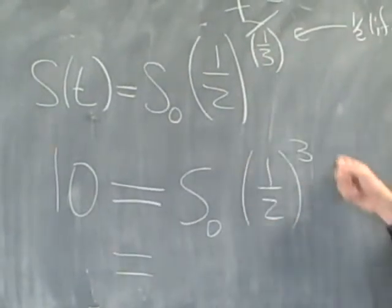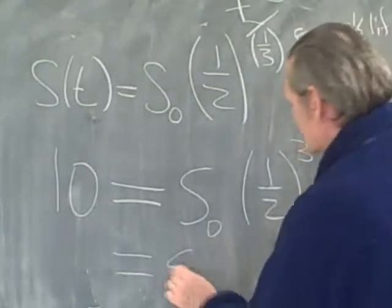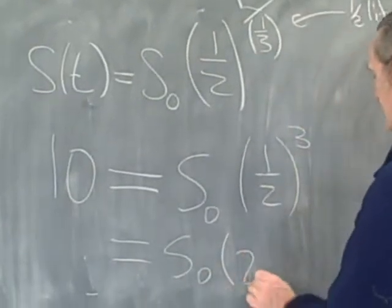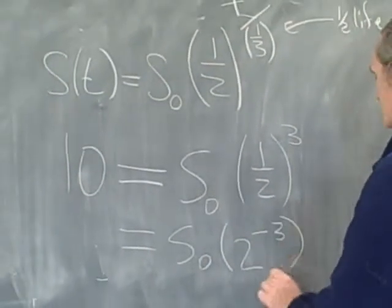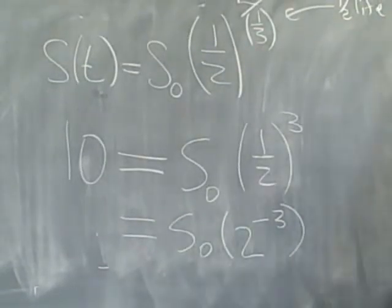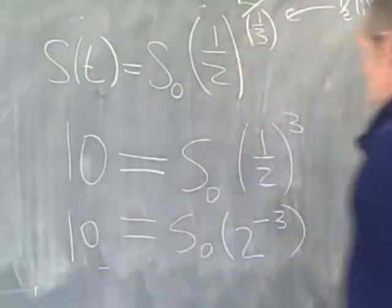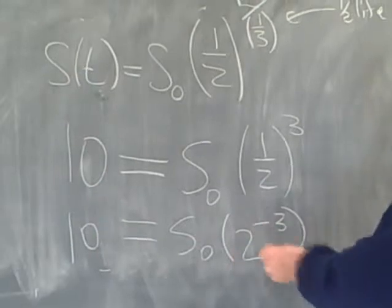Now I'm going to have to divide through by one half. It's going to be a lot more convenient if I write that S not times two to the third. So I get ten is equal to S not times two to the negative three.